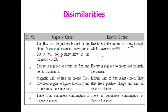Magnetic lines of flux are always closed — they flow from the N pole to the S pole. But electric lines of flux are not closed; they start from positive charges and end on negative charges. Additionally, there is no continuous consumption of magnetic energy — it is not consumed but utilized to perform other functions. In contrast, when a load is connected in an electric circuit, there is continuous consumption of electrical energy. These are the basic differences between the magnetic circuit and electric circuit.